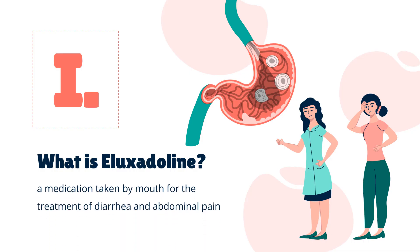Eluxatiline, sold under the brand names Viberzi and Truberzi, is a medication taken by mouth for the treatment of diarrhea and abdominal pain in individuals with diarrhea-predominant irritable bowel syndrome. It was approved for use in the United States in 2015. The drug originated from Janssen Pharmaceutica and was developed by Allergan.